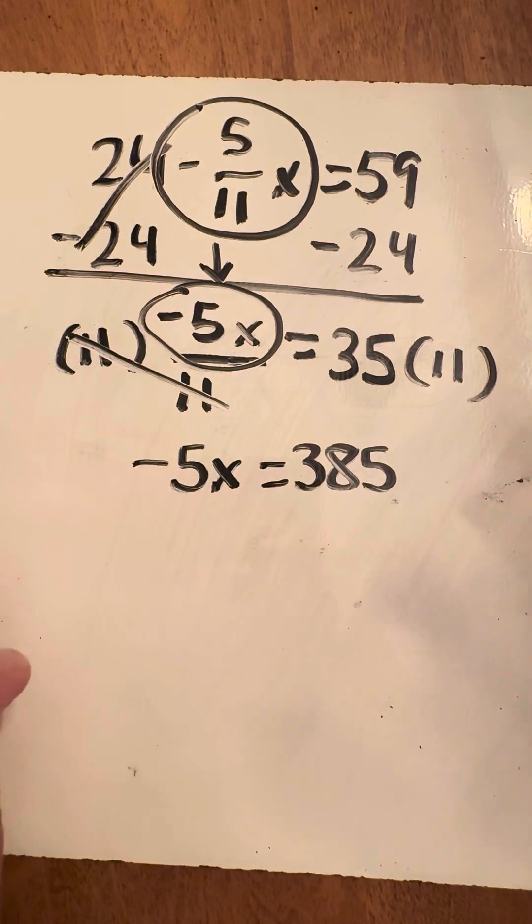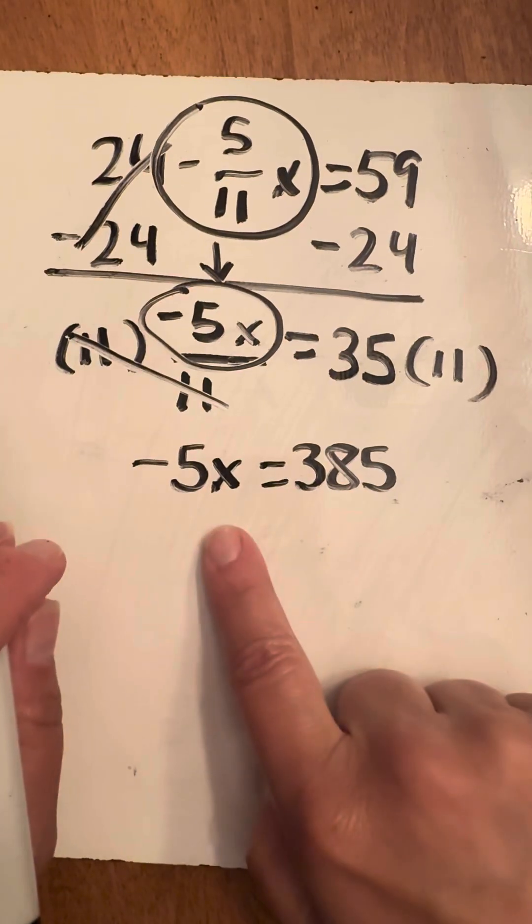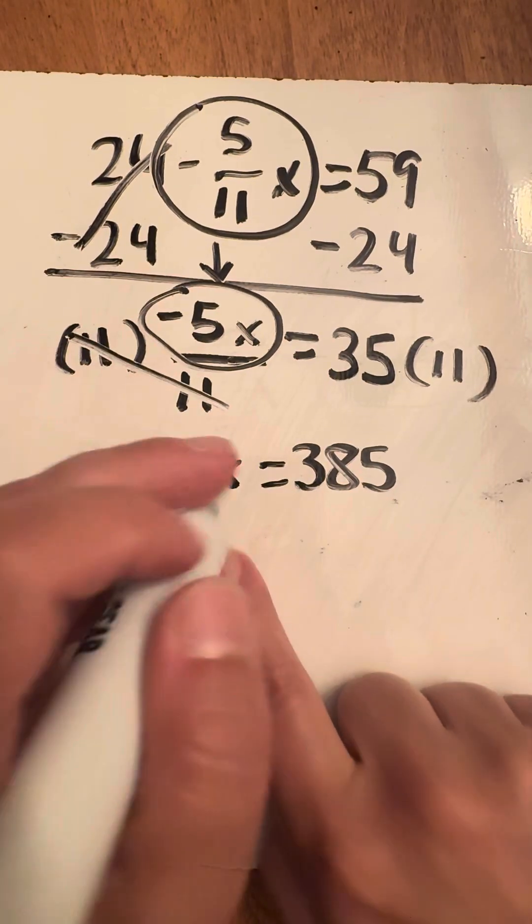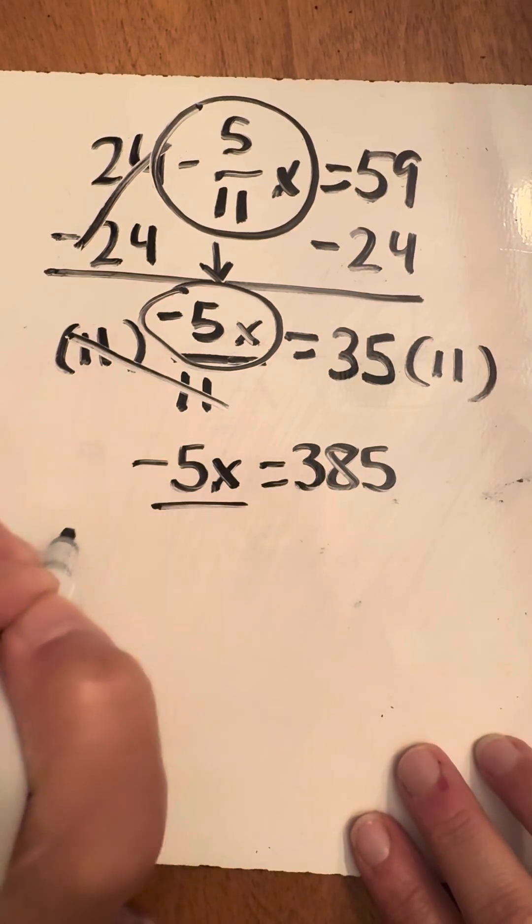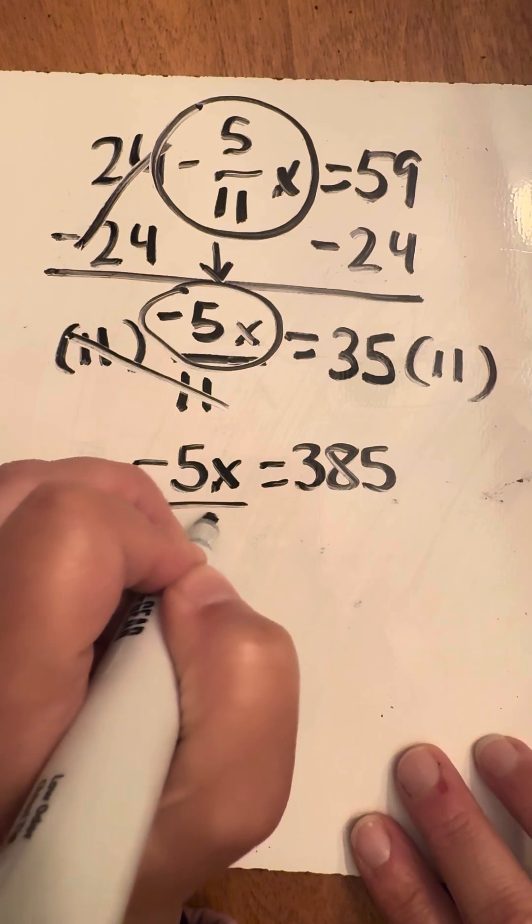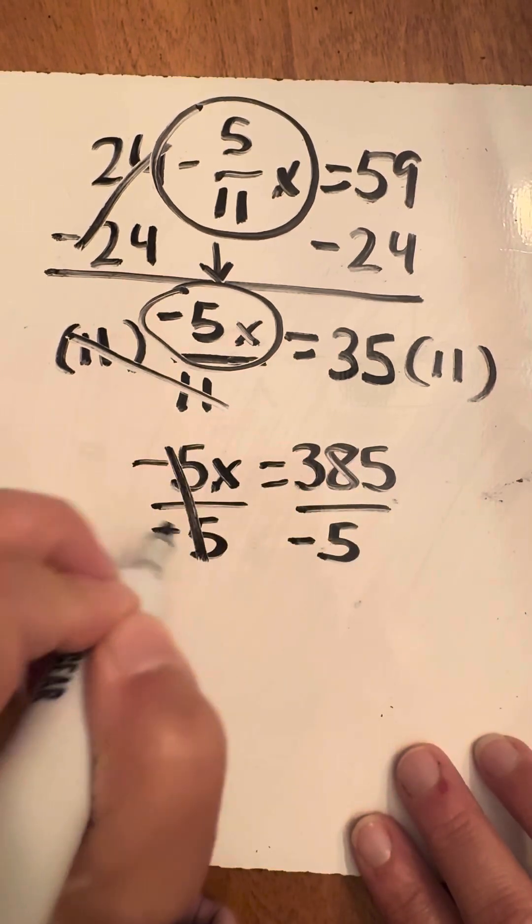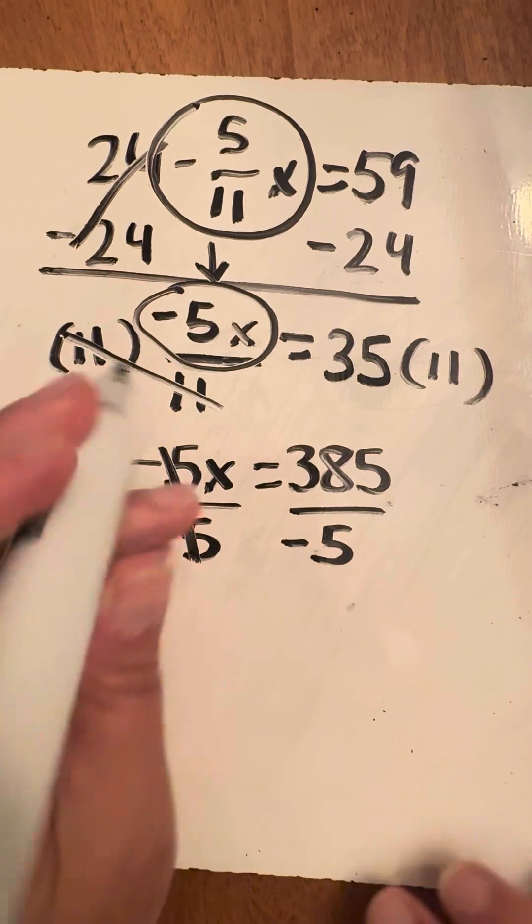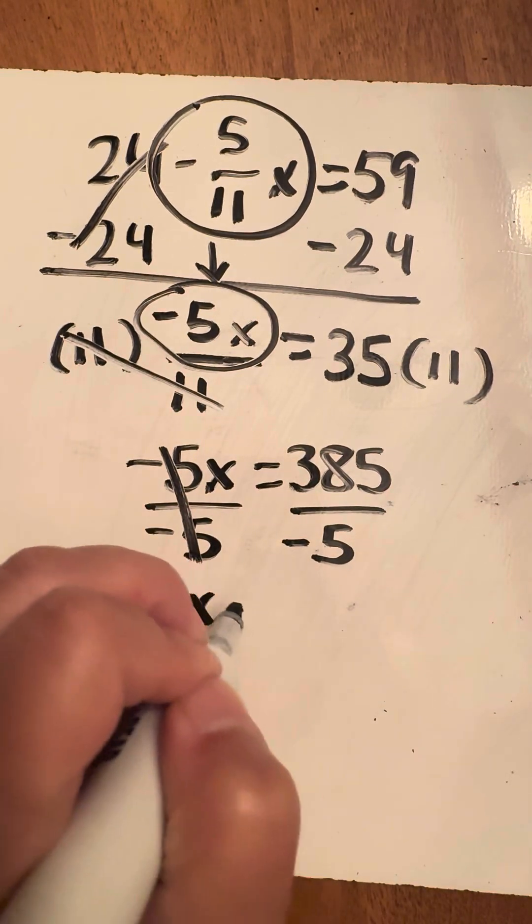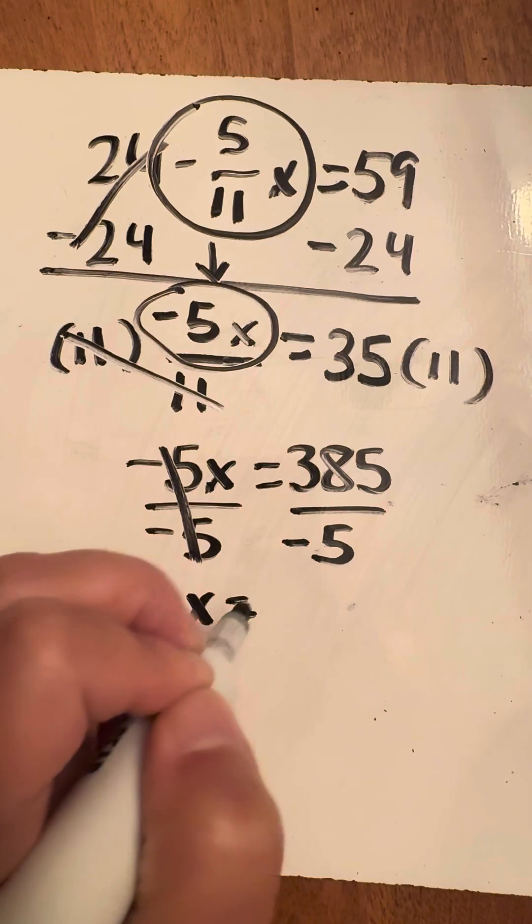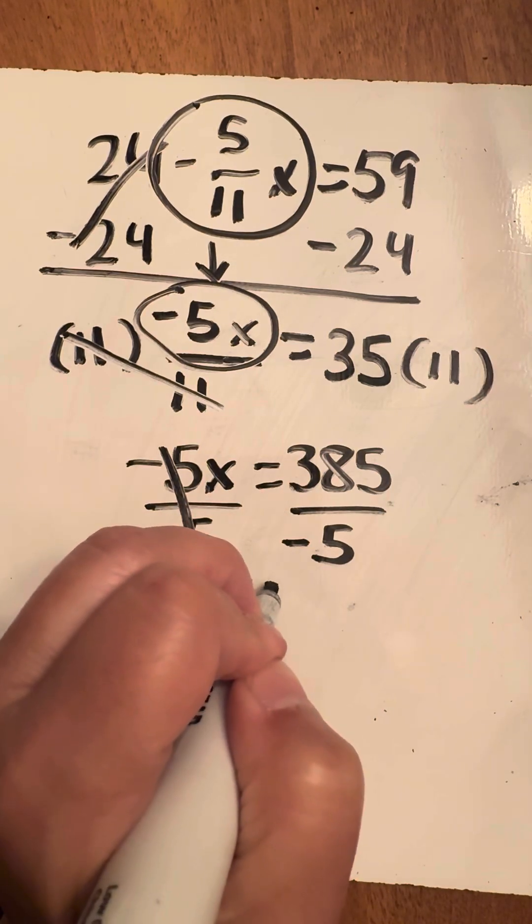And then our final step, step three, is to take the multiplication and undo that. Opposite of multiplying is to divide by whatever's in front of x, which in this case is negative 5. You do that on both sides. That wipes that out, leaving me with just 1x right there. And then 385 divided by negative 5 is going to leave me with negative 77.